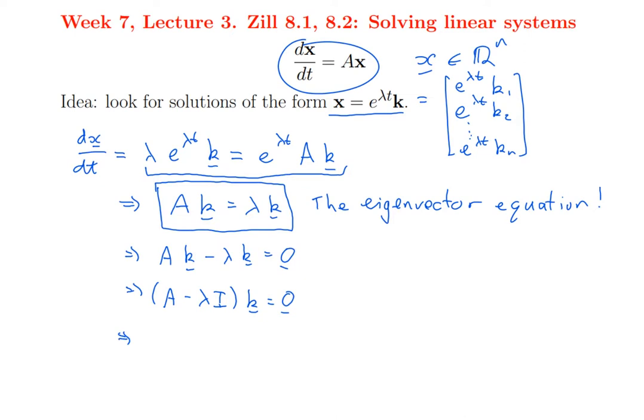That means if a matrix times a vector is zero and k is non-zero, well, of course I want k to be non-zero, because otherwise my solution would be zero, which I knew was a solution already. So this means lambda is an eigenvalue of A and k is its eigenvector. Now, if a matrix times a vector has a non-zero solution k, that matrix must be singular, its determinant must be zero.